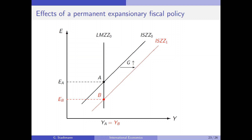Why does this increase in demand not lead to an increase in GDP? The exchange rate is decreasing from level A to level B, and due to this decrease we have a negative expenditure switching effect. Exports will decrease, imports will increase, and therefore this exchange rate effect has a negative effect on the demand for domestic goods. Government increases spending, raising demand for domestic goods, but the exchange rate effect decreases demand via a negative expenditure switching effect, and these two effects cancel each other out.